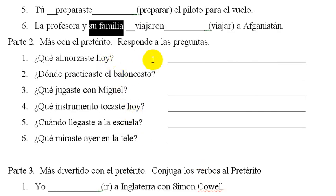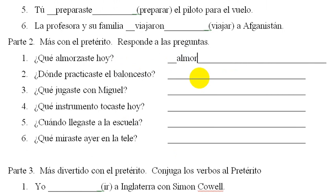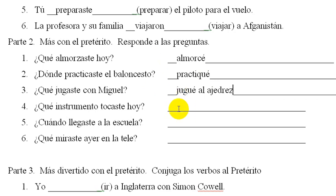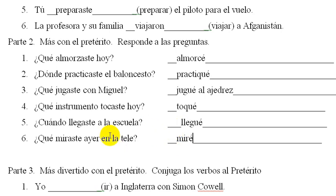Moving along. These are open-ended questions, so there are a lot of ways you can answer, but I'm just going to show you the verb. ¿Qué almorcé? — What did you eat for lunch today? Almorcé. Notice the spelling change of the Z to a C. Almorcé una torta. ¿Dónde practicaste el baloncesto? — Where did you practice basketball? Practiqué en el gimnasio, maybe. ¿Qué jugaste con Miguel? — What did you play with Miguel? Jugué al ajedrez — I played chess, maybe. ¿Qué instrumento tocaste? — What instrument did you play? Toqué el piano. ¿Cuándo llegaste a la escuela? Llegué a las siete. ¿Qué miraste en la tele? This is just a regular AR verb, so nothing to worry about. Miré mi programa favorito. These are the car/gar/zar verbs that have that spelling change in the yo form. If you're unfamiliar with these, search YouTube for Señor Belles car/gar/zar and you'll find my video on that.